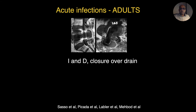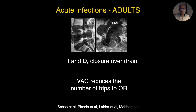In adults with acute infection, the literature supports incision and drainage and closure over a drain. The aim is to retain the implants, which are required for stability whether done for trauma or spondylolisthesis. If multiple debridements are anticipated, VAC reduces the number of trips to OR and has been shown to successfully help in retaining the implants.